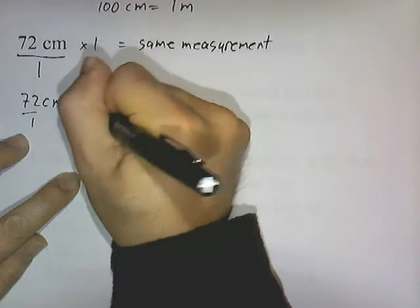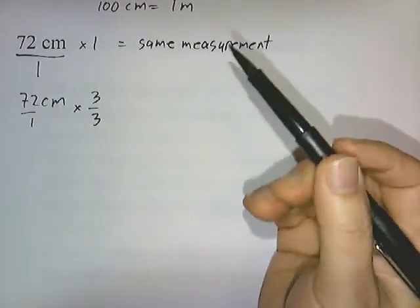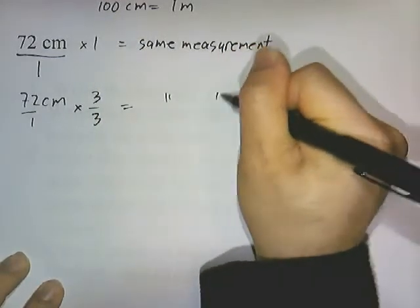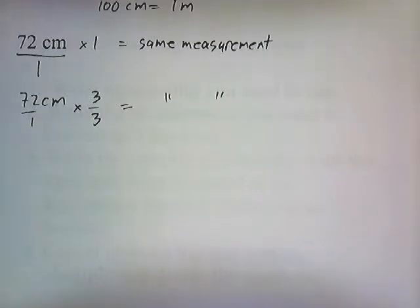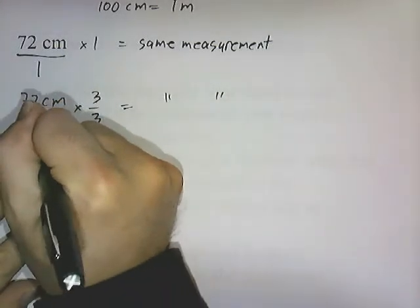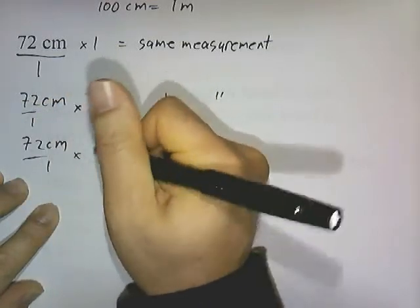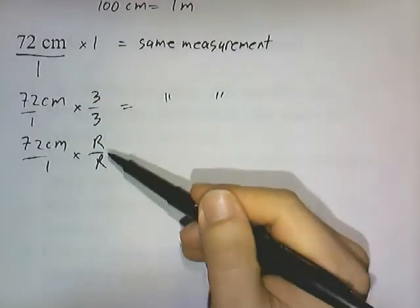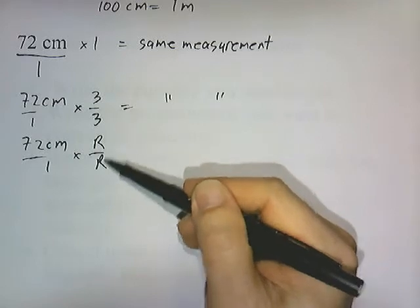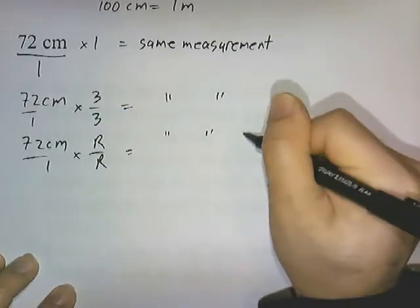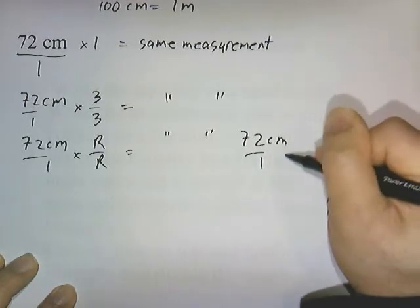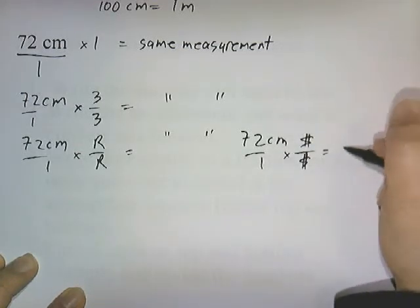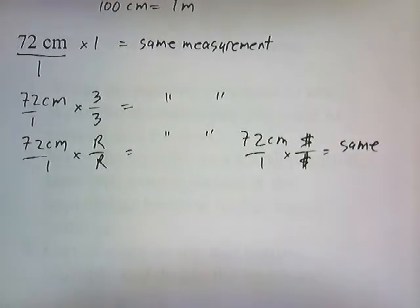Let's suppose instead of multiplying by 1, I multiplied by a fraction like 3 over 3. I'm still multiplying by 1 if you have the same thing on top and the same thing on the bottom. How about 72 centimeters over 1 times r over r? It doesn't matter if it's numbers or letters — as long as you have the same thing on top and the same thing on the bottom, it's still equal to 1. I could make it 72 centimeters over 1 times dollar sign over dollar sign — if you haven't changed it, you're still multiplying it times 1.